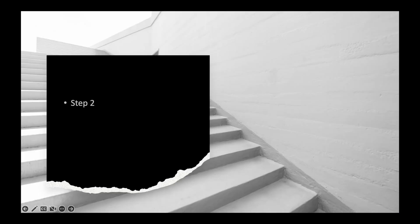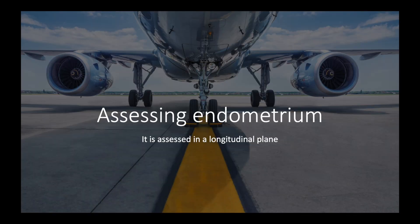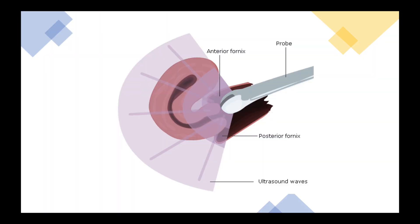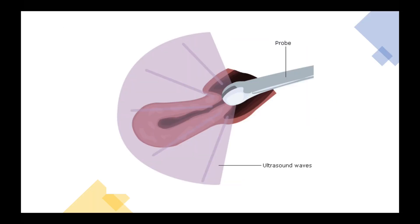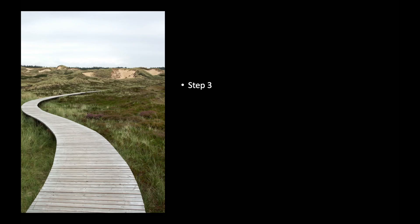Step two is to assess the endometrium in the longitudinal plane. In the case of an anteverted uterus, the probe is kept in the anterior fornix; in the posterior fornix for a retroverted uterus; and just over the cervix for an axial position of the uterus.